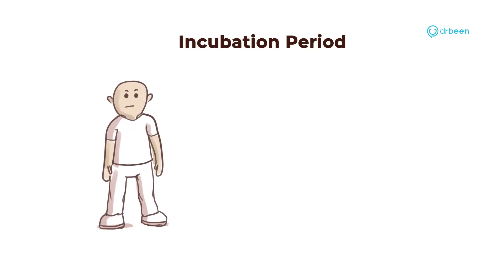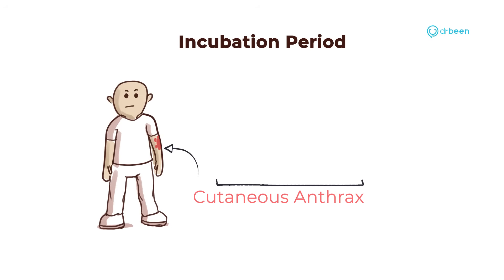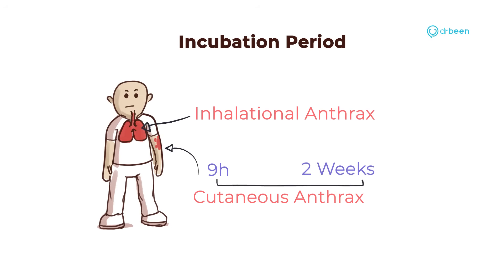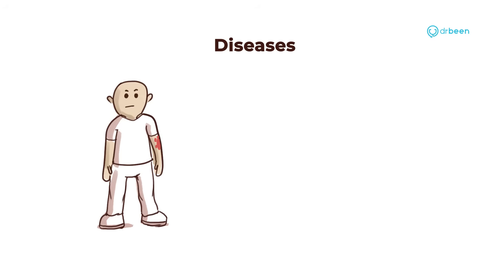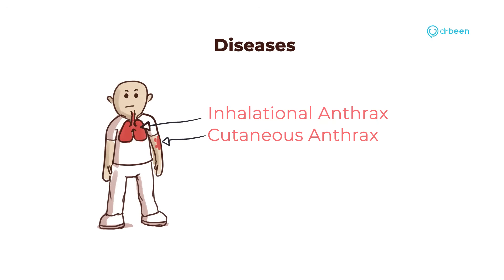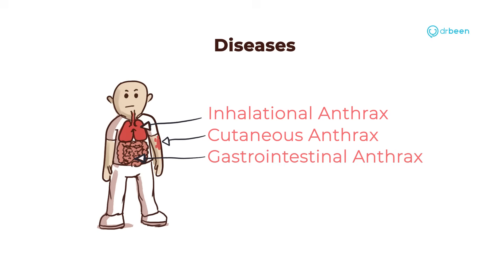Let's talk about the incubation period, using Davidson as the reference. Cutaneous anthrax usually takes around 9 hours to 2 weeks, whereas inhalation anthrax takes about 2 days. There are 3 types of anthrax the bacteria causes: cutaneous anthrax, inhalational anthrax, and gastrointestinal anthrax.